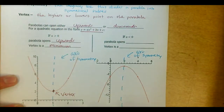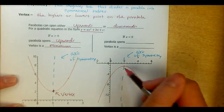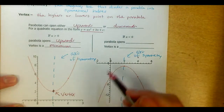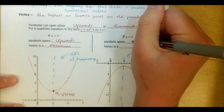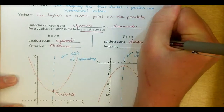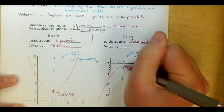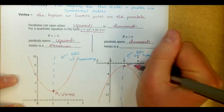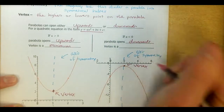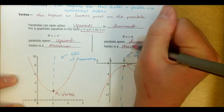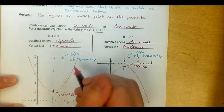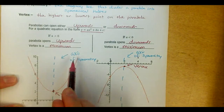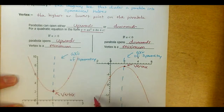If the parabola opens downwards, like this graph on the right, that means the a value must have been negative — your leading coefficient was negative. That's what makes a parabola open downwards, and that would make the vertex the highest point on the graph, which is a maximum. Think of it like having a hill here and a valley here: when the parabola opens upwards the vertex is a minimum, and when it opens downwards the vertex is a maximum.